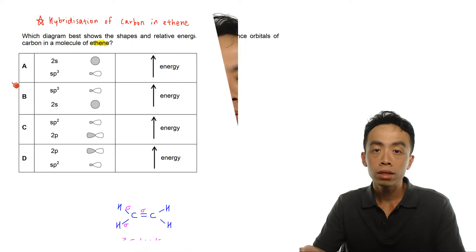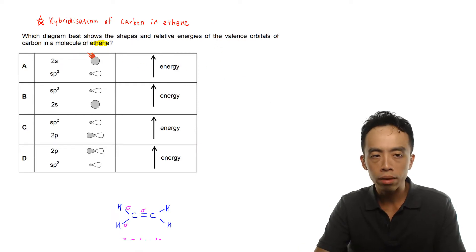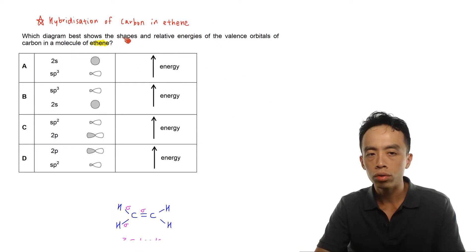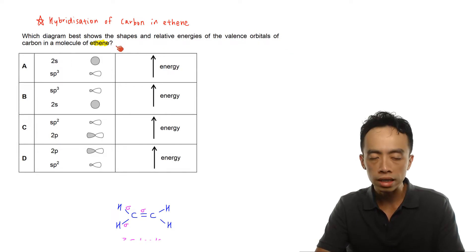Hi everyone, this is Maverick Pua, the chemistry guru. In this video we want to discuss a question involving the hybridization of carbon in ethene. Let us take a look at this question: which diagram best shows the shapes and relative energies of the valence orbitals of carbon in a molecule of ethene?